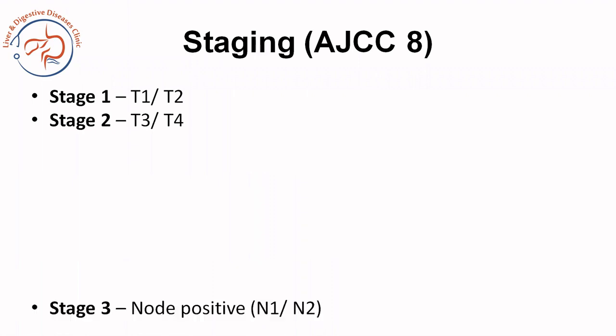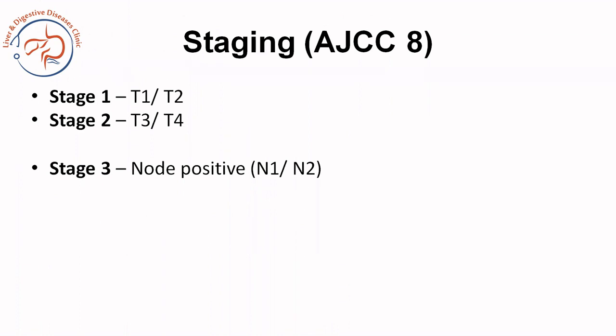Just to touch on these topics briefly: Stage 1 is T1, T2, N0; and Stage 2 is T3, T4, N0. So Stage 1 and 2 are node-negative disease and Stage 3 is node-positive disease — whether it is N1a, N1b, N2, or whatever — it is Stage 3. To remember it practically: Stage 1 and 2 are node-negative disease, Stage 3 is node-positive disease, and Stage 4 is metastatic disease.